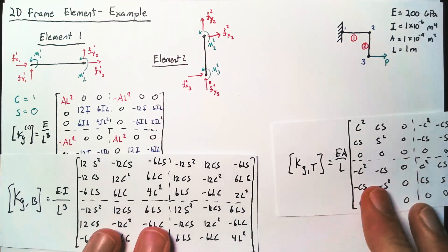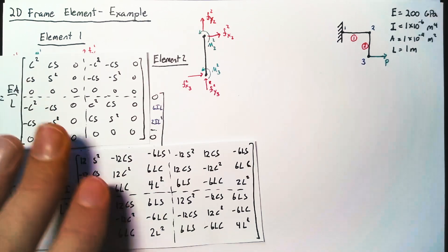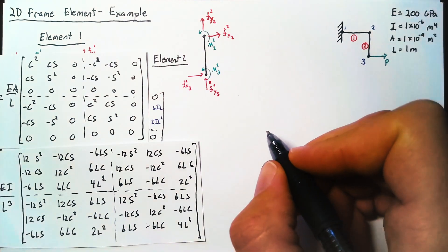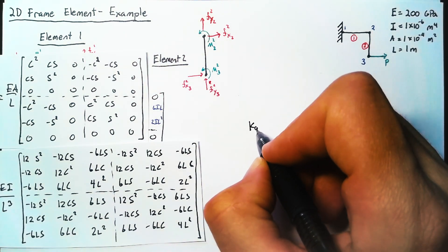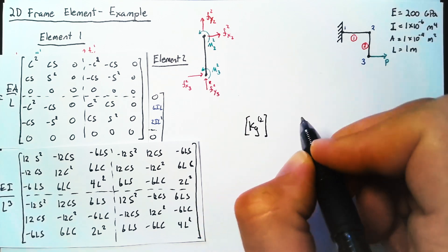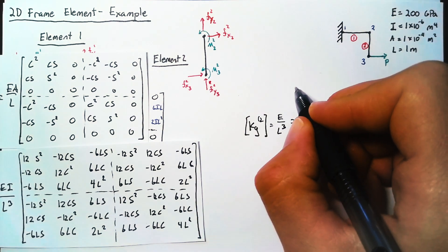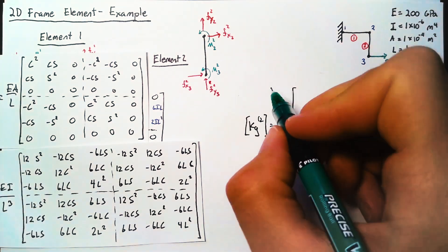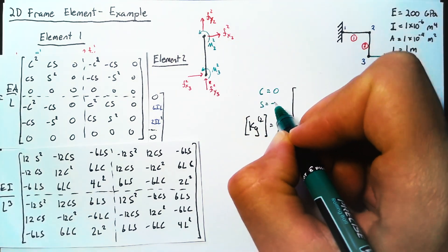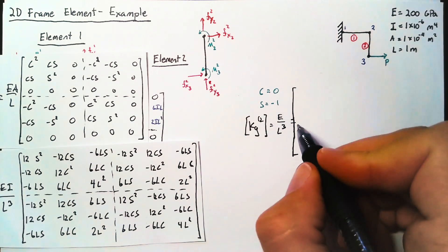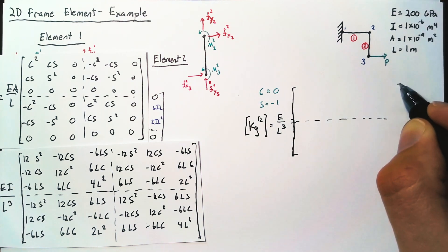Now let's move these over, and we'll do the same for element 2. So this is going to be the stiffness matrix for element 2. And that's going to have the E over L cubed out front again. And this time, we're going to have C is equal to zero, and S is equal to negative 1.